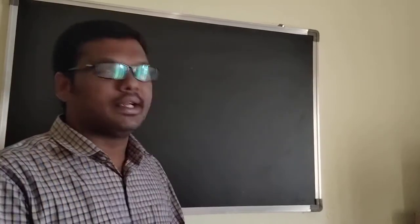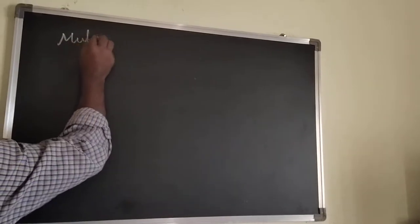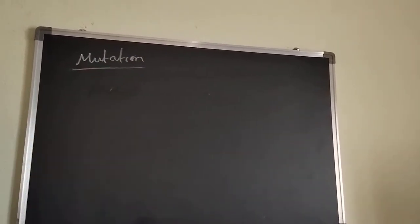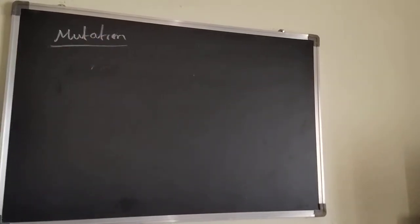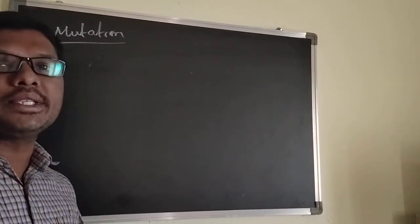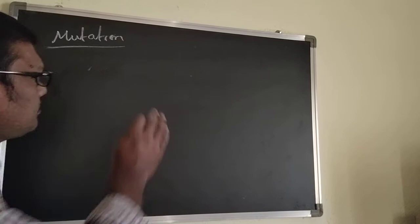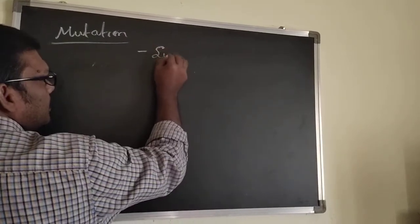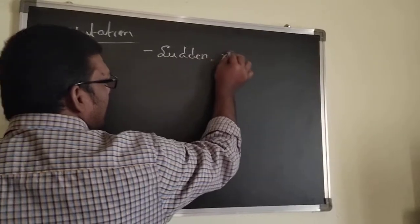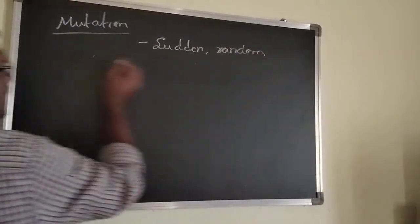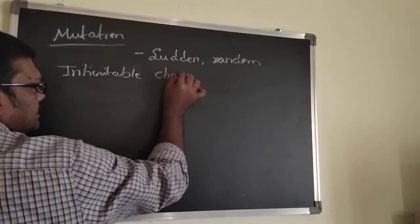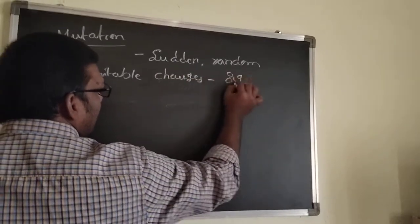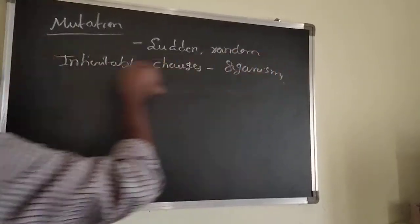The remaining problems are similar to the five we discussed. Now we can discuss mutation. Mutation is a sudden, random, heritable change that takes place in an organism. Evolution, in contrast, is a gradual and continuous process that can form new species.